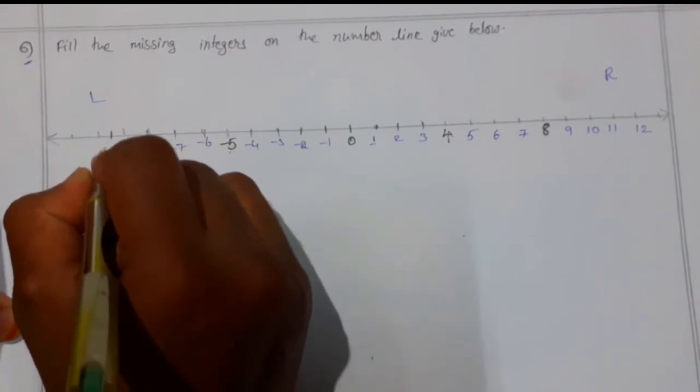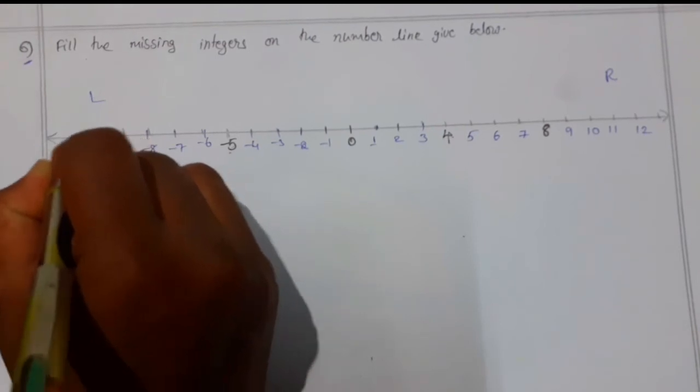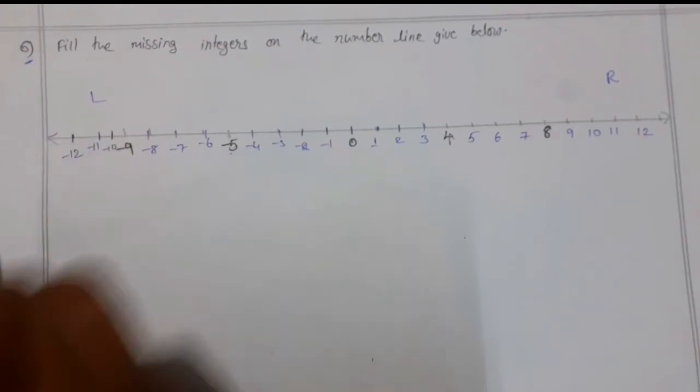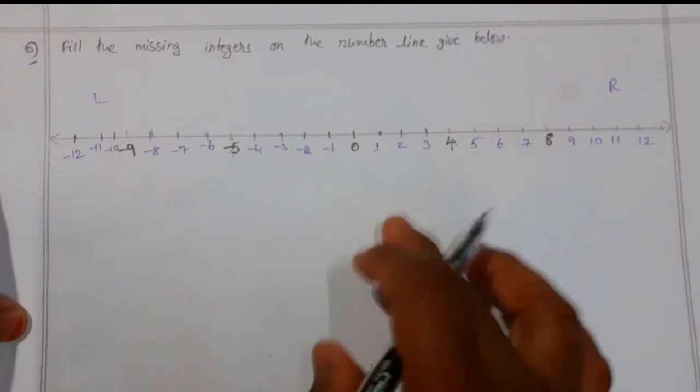This is minus ten, this is minus eleven, this is minus twelve. This is how to fill the missing numbers on the number line.